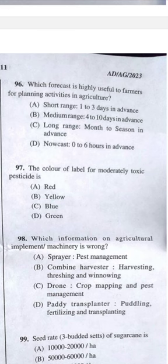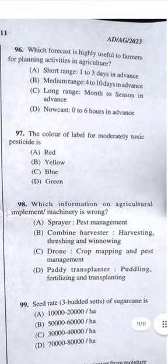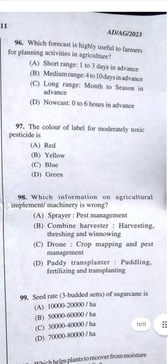Question 96: Which forecast is highly useful for farmers for planning agricultural activities? Answer C — long range forecast, useful for planning months to a season in advance. Question 97: The color of the label for moderately toxic pesticide is yellow; highly toxic is red, blue is slightly toxic, and green is safe.